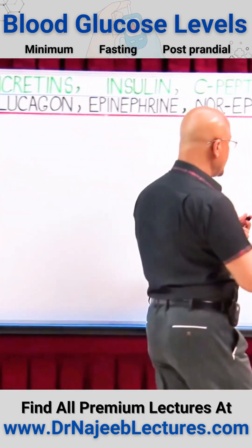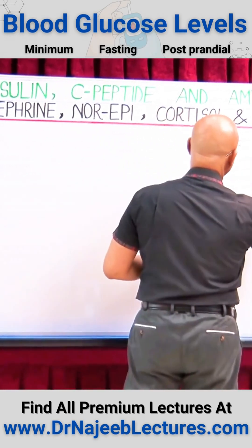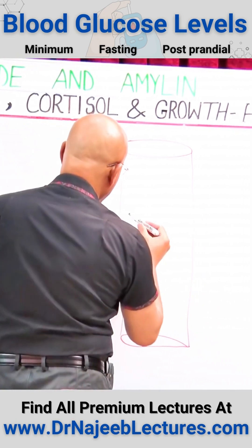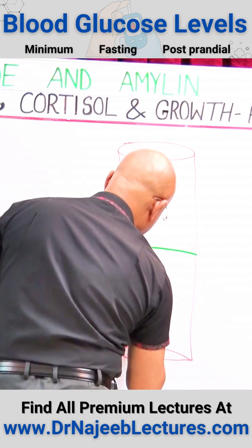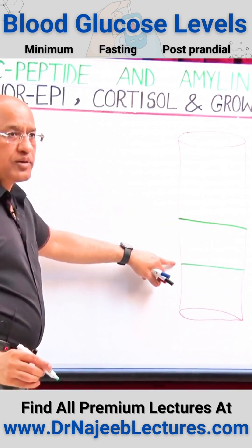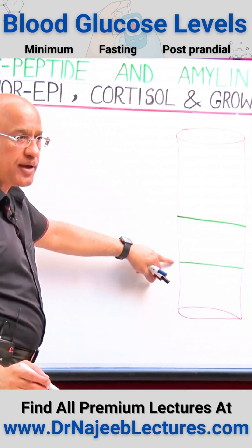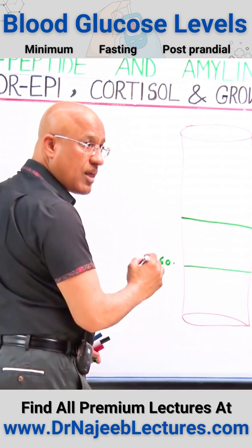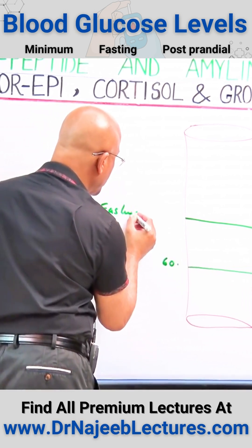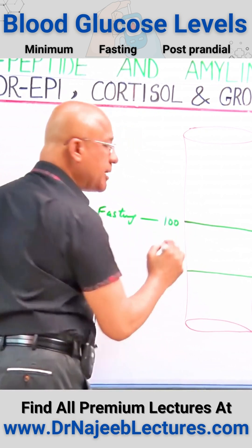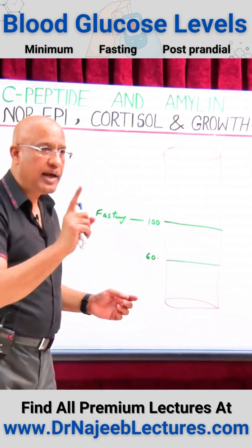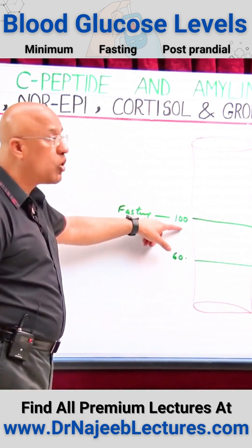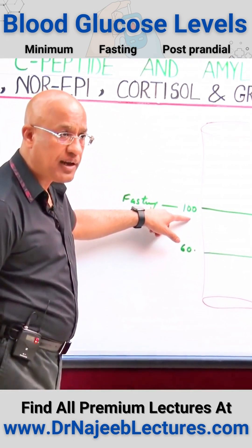Let's talk about what is the normal range. I'll make a hypothetical diagram. Blood glucose should be maintained somewhere between — normally in a healthy person, blood glucose should stay somewhere more than 60. Fasting blood sugar should not go more than 100 milligrams per dL. All our discussion today is about a healthy person, and in a healthy person, fasting blood sugar should not go above 100 milligrams per dL.